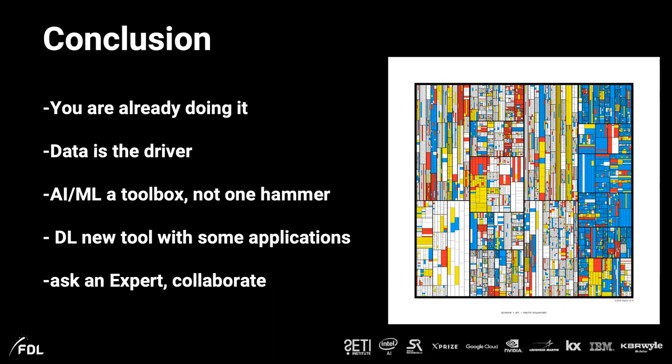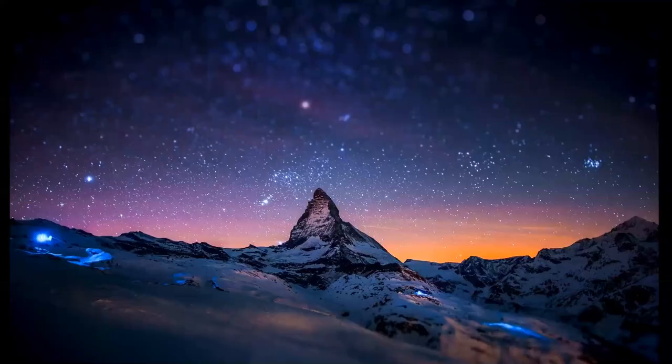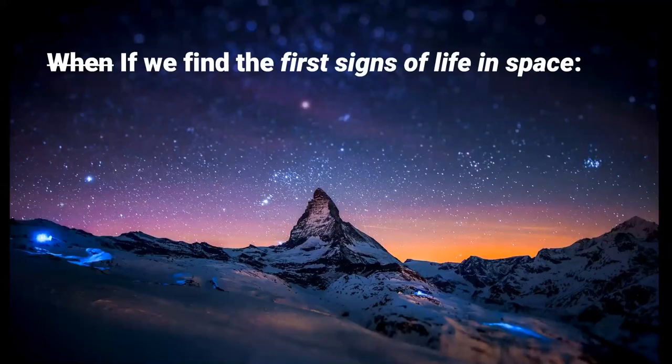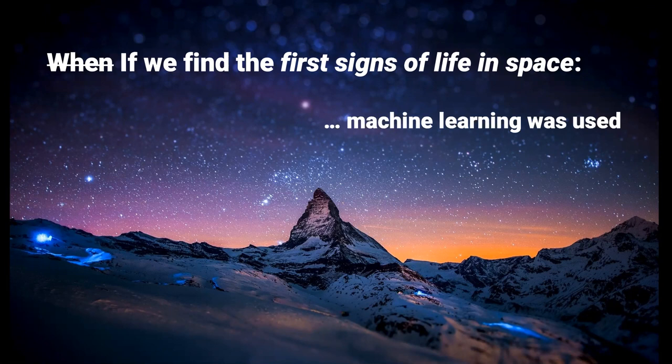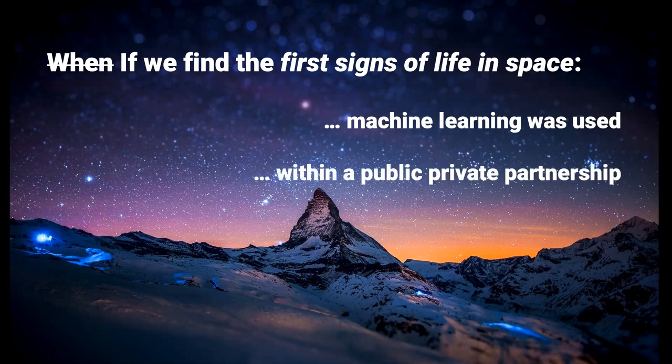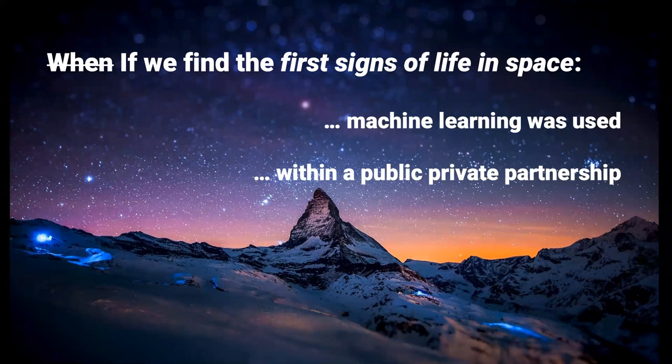And then I want to close with, I make two bets with you. So if, and not when, this is important. If we find the first signs of life in space, I make the bet with you that machine learning was used one way or the other. So either the planet that we found life on was found with AI or the autonomous bot that found the biosignature on Mars was using machine learning. So that's my bet number one. And then bet number two is that it might also happen in one of these public private partnerships, such as FDL. So maybe not just an academic endeavor. And maybe that's a good topic to talk about at lunch. Thank you.